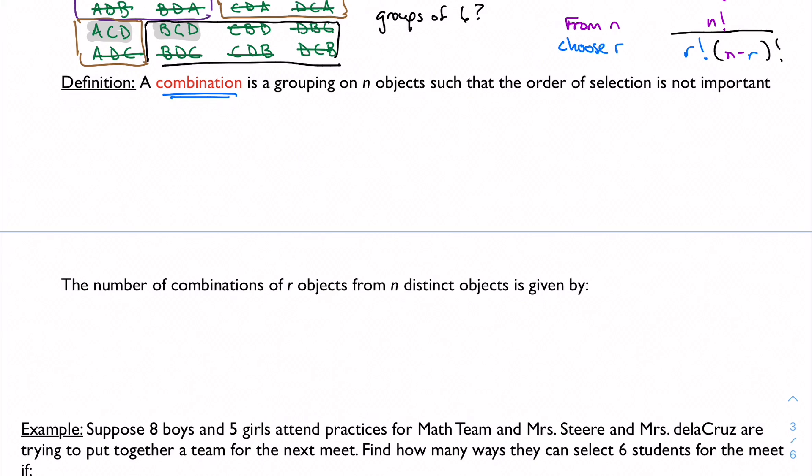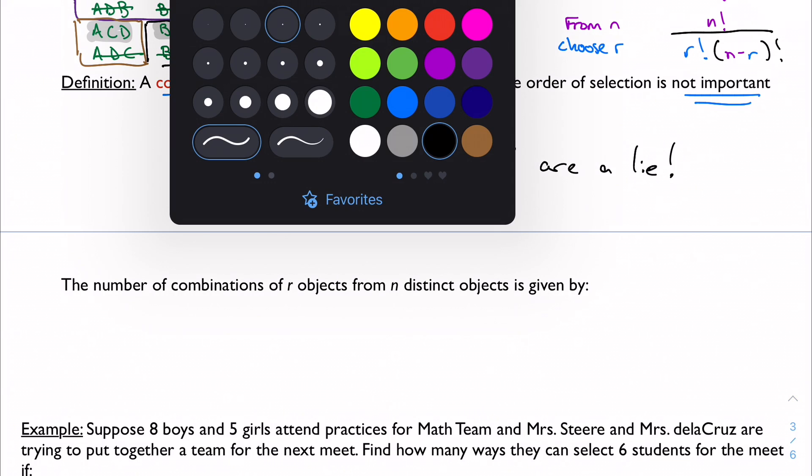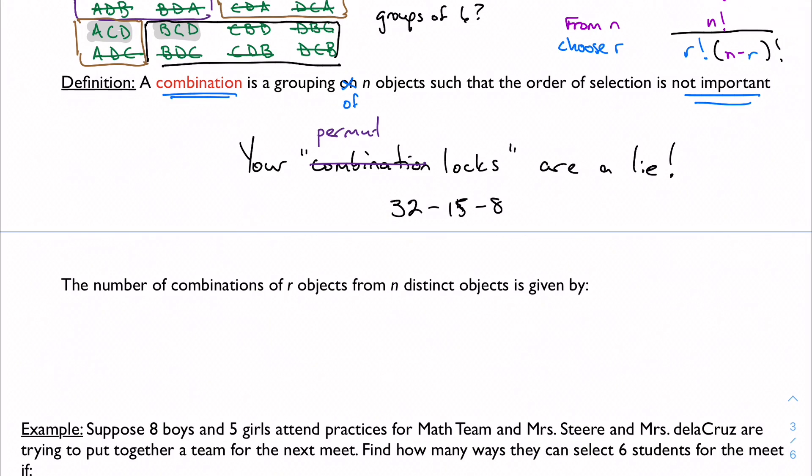So a combination is a grouping of N objects such that the order of selection is not important. And this is when every math teacher stops what they're doing and says your combination locks that you put on your lockers are a lie. Because if my combination lock is 32, 15, 8, and I put it in 8, 32, 15, the lock is not going to open, because the order matters. Your combination lock is really a permutation lock.